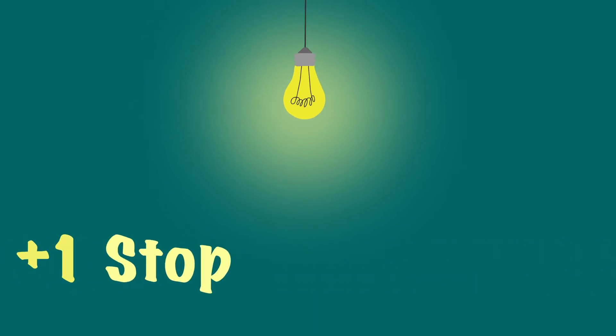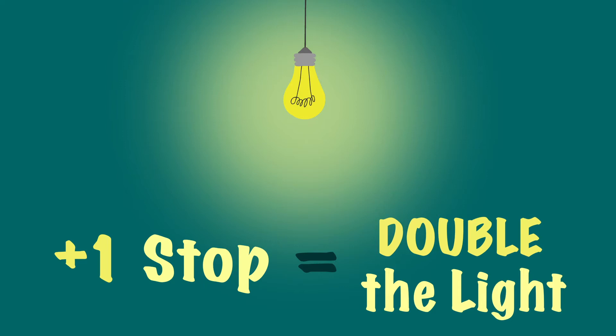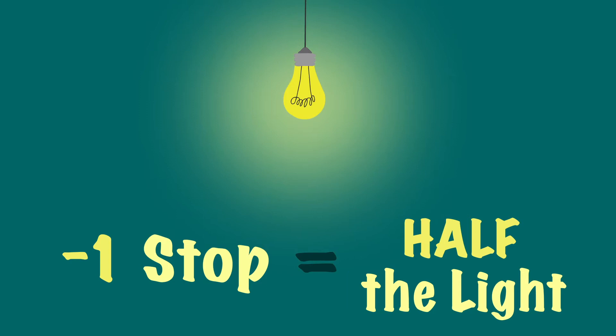A stop is a term used to define an amount of light. If you added one stop of light, this would mean you doubled the amount of light. And if you took away one stop, this would mean you halved the amount of light.